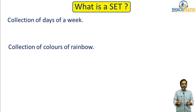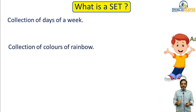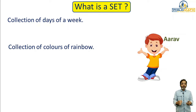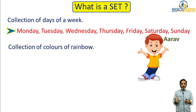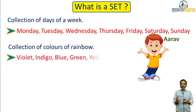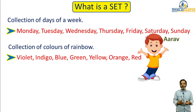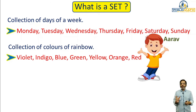The answer for the first one is all the days of a week from Monday to Sunday. For the second one, the answer is violet, indigo, blue, green, yellow, orange, red — that is VIBGYOR. If I ask this question to any student, the answer is definite: there are seven days in a week and there are seven colors in a rainbow.